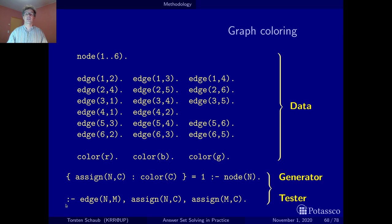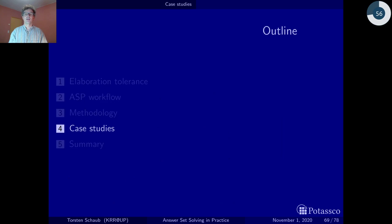That's what you do with this integrity constraint where you remove all solutions that invalidate this constraint. We have no optimizer here but we'll see encodings with optimization statements later on. Now the real fun starts with the case studies.